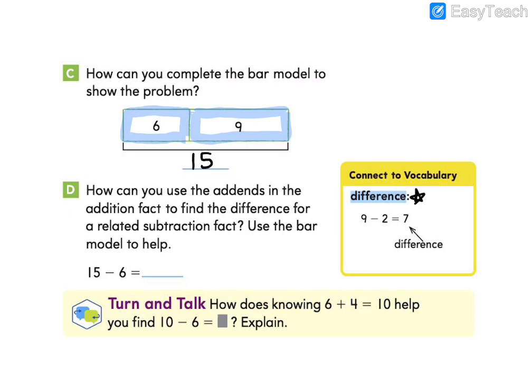So if we're answering this subtraction equation, 15 minus six, we need to find the difference between 15 and six. If we use our bar model to help, we know that if we have a whole of 15 and we take away this part six, how many will we have remaining? We will have nine remaining.